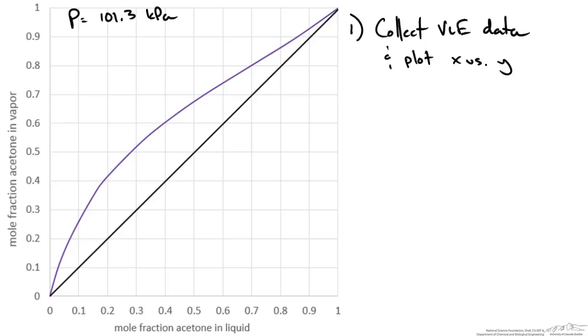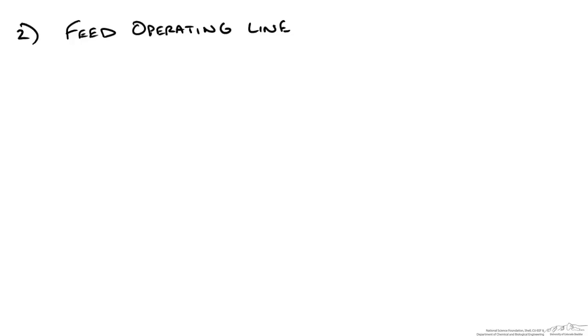Let's determine our feed line. Our feed operating line is defined as y, the vapor mole fraction of acetone, equals Q over Q minus 1 times the liquid mole fraction x, minus ZF to designate our feed composition, and this is over our quality Q minus 1.